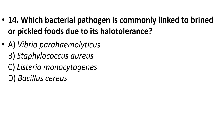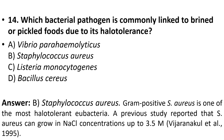Question 14: Which bacterial pathogen is commonly linked to brined or pickled food due to its halo-tolerance? Options: Vibrio parahaemolyticus, Staphylococcus aureus, Listeria monocytogenes, Bacillus cereus. The answer is option B, Staphylococcus aureus. Gram-positive Staphylococcus aureus is one of the most halo-tolerant eubacteria; it can grow in sodium chloride concentrations up to 3.5 molar.